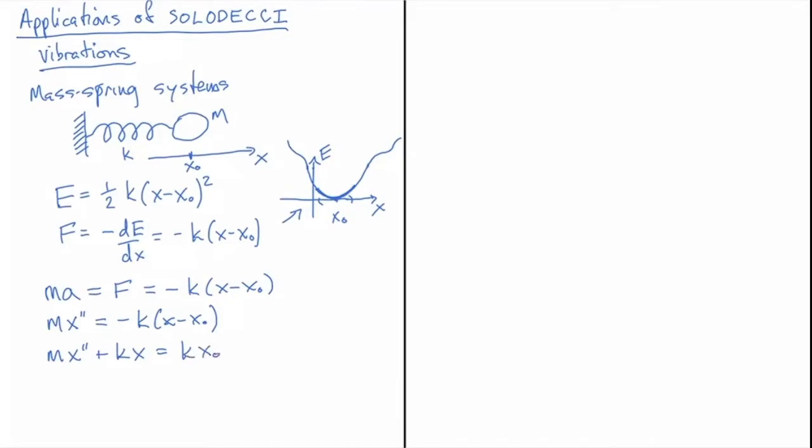And that is a second order differential equation for X with constant coefficients and an inhomogeneous term because this K times X₀ is a fixed constant. So that is our simplest mass spring system.